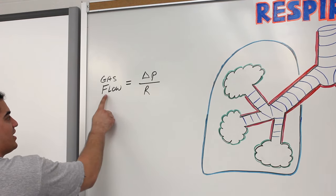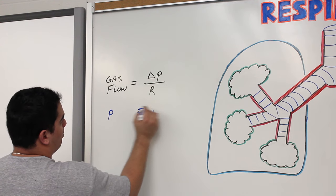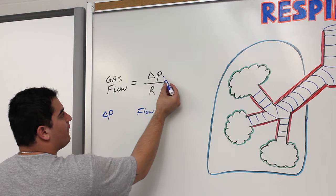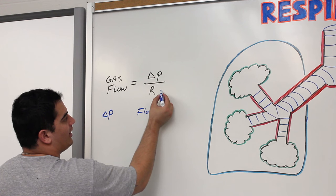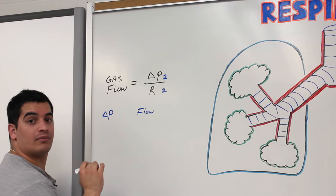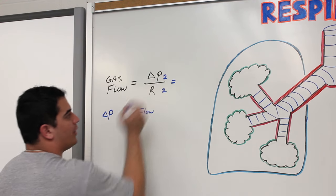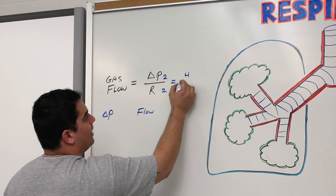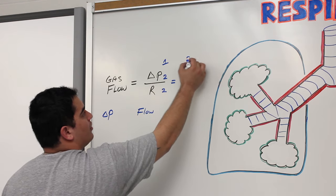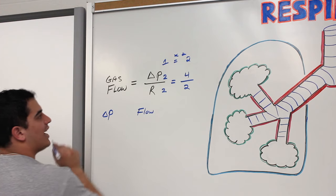Let's see how pressure affects gas flow and determine the relationship between pressure and flow. If resistance remains constant at 2 and pressure is originally 2, flow = 2/2 = 1. If I increase the pressure to 4, keeping resistance constant at 2, then flow = 4/2 = 2. So flow went up. Whenever pressure increases, gas flow increases.